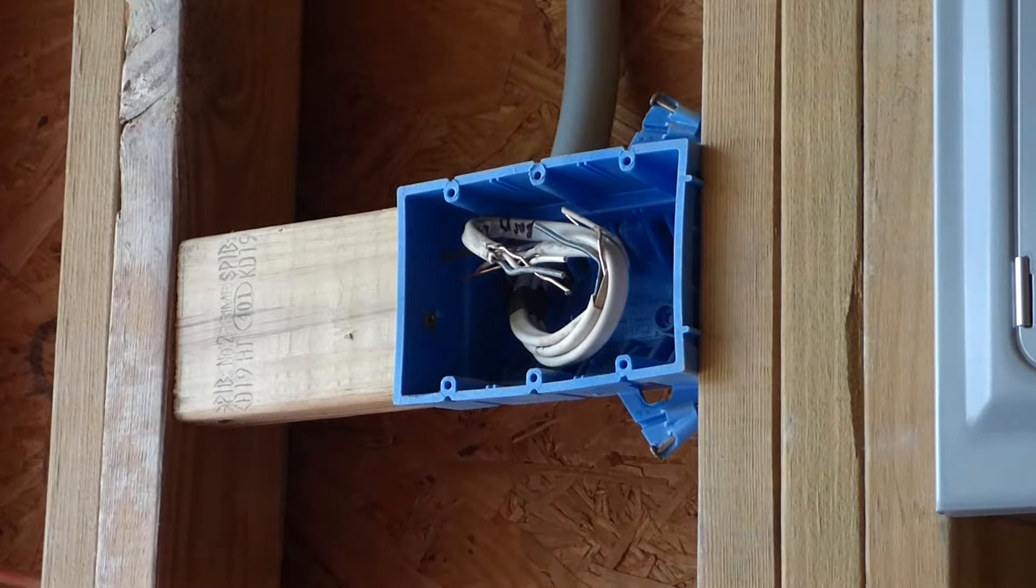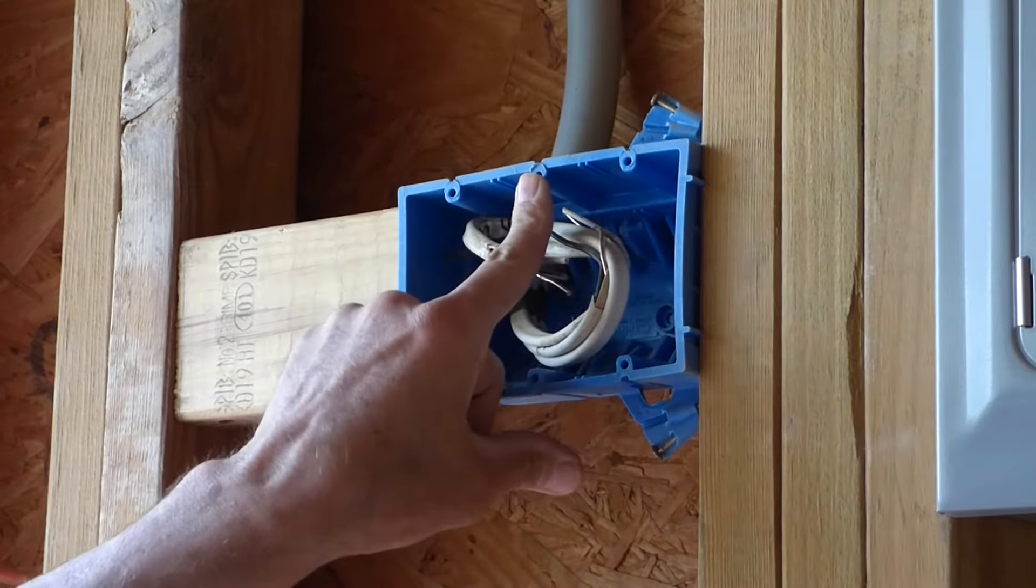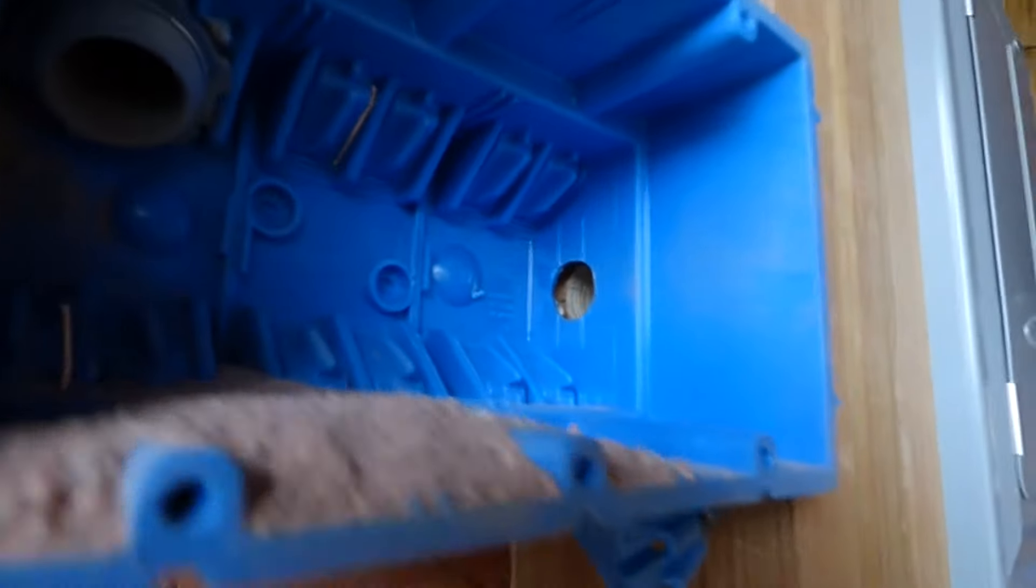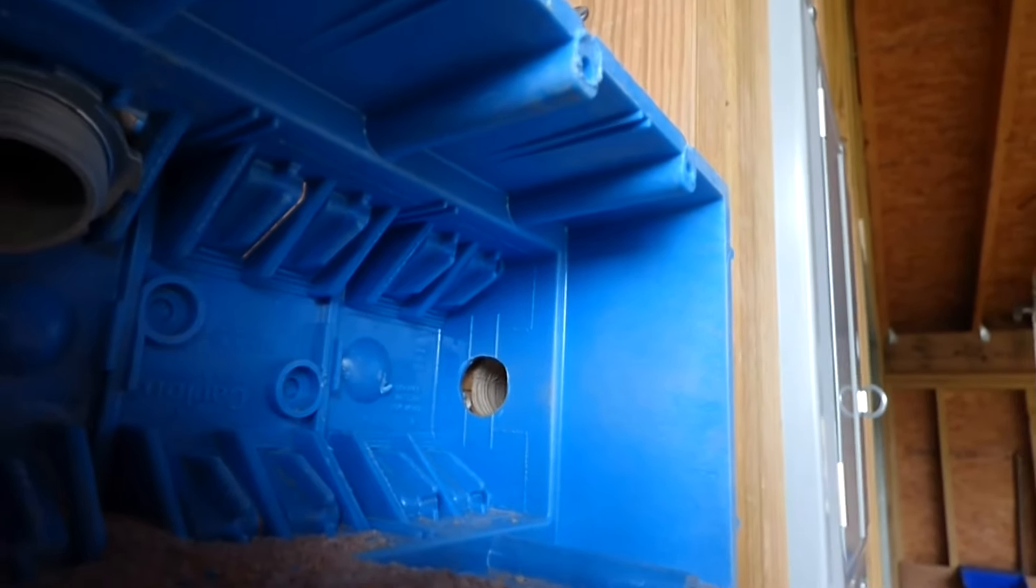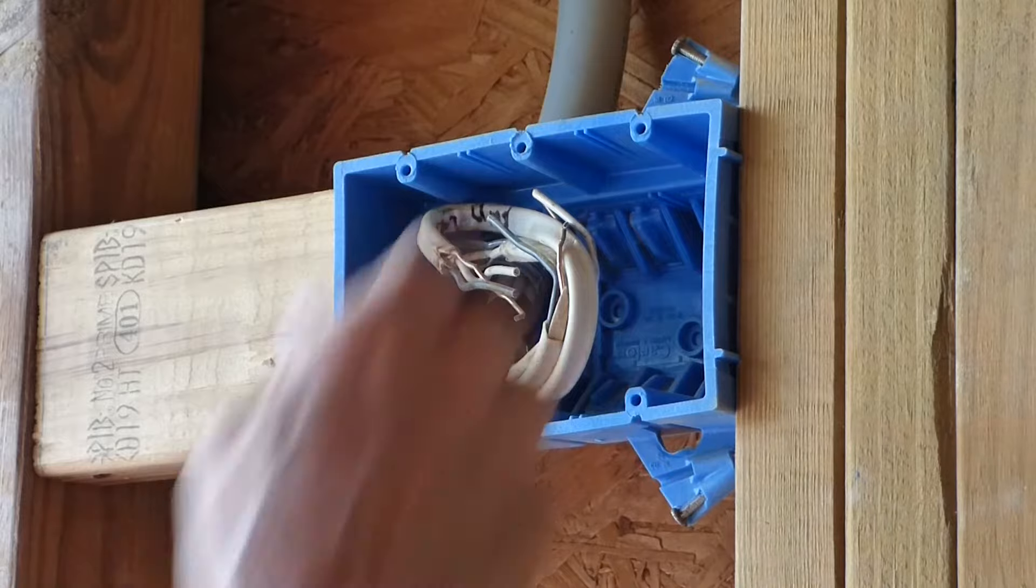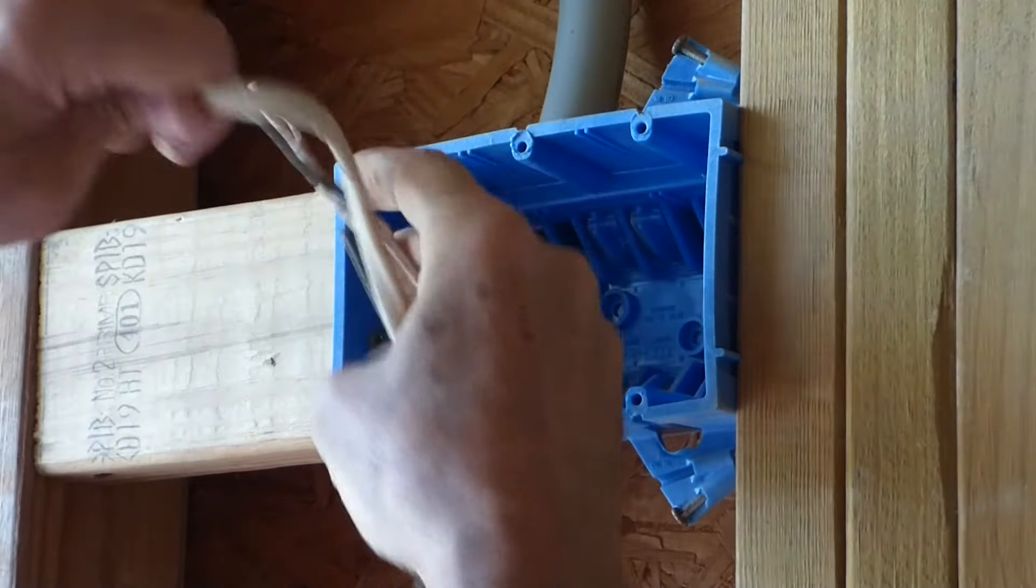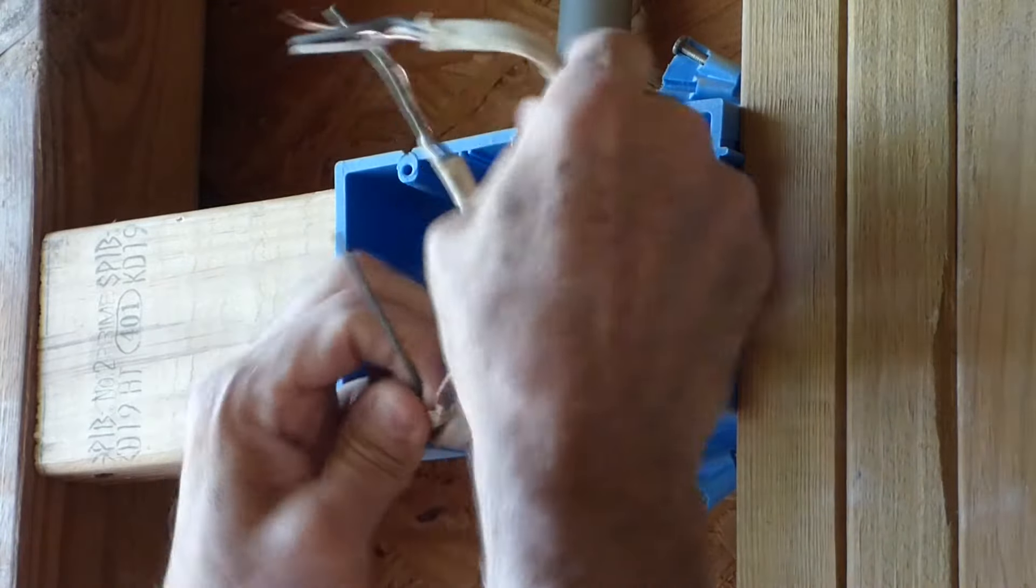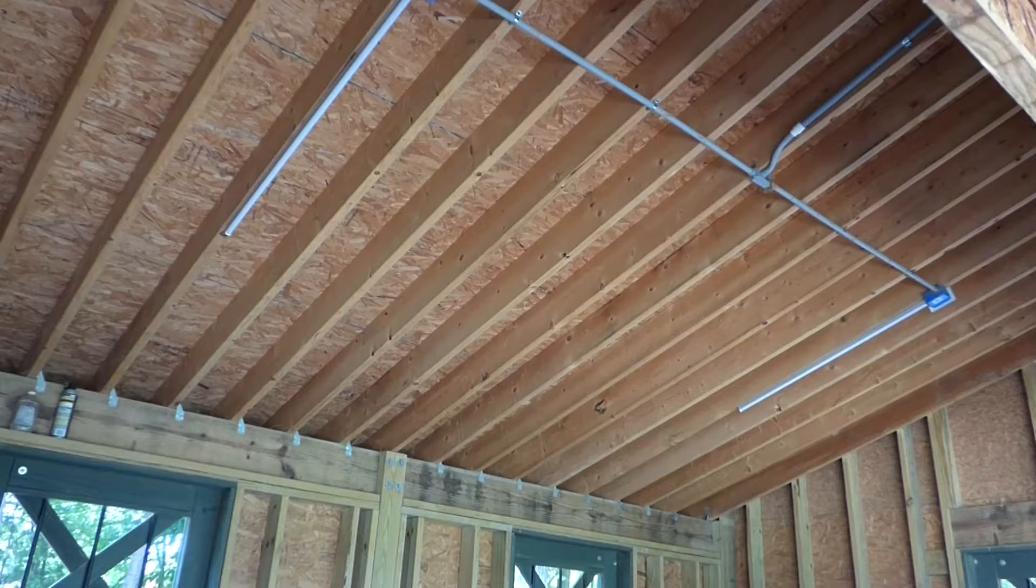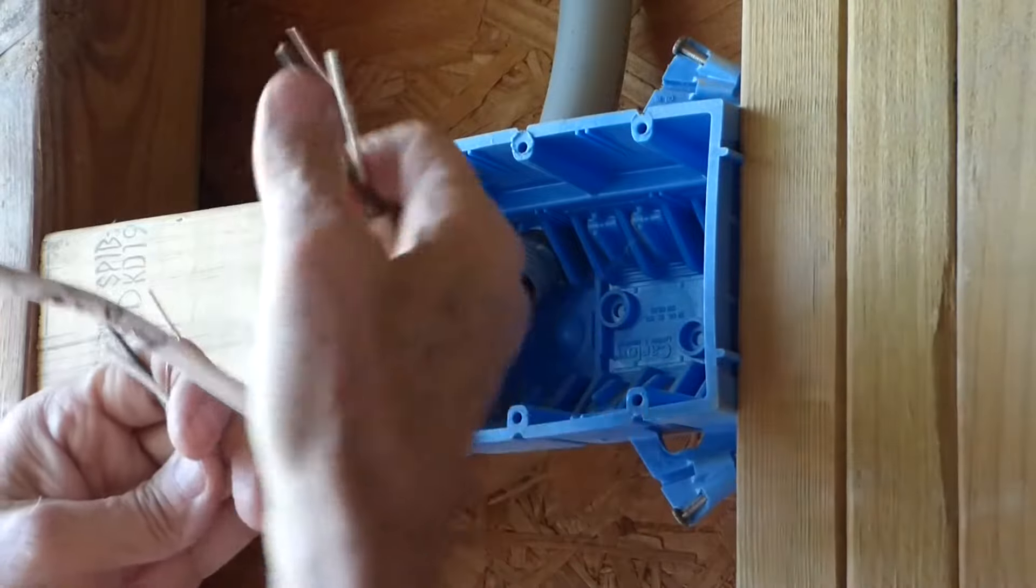This three gang box is going to have a switch here, a switch here, and an outlet here. There's a hole that goes right through to the panel so I can feed this three gang box. So what I'm going to do first is pull these wires out. And when I was pulling the wires, I wrote on the casing, barn lights, can lights here, and this is the outlet here.